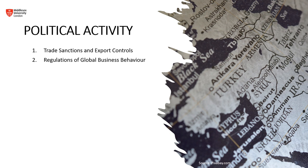We now shift to political activity. The two key topics here are trade sanctions and export controls, and regulations of global business behavior. Trade sanctions are penalties imposed by one country on another, often to discourage the latter from engaging in certain activities that the former finds objectionable. Sanctions can take various forms including tariffs, barriers to trade, import and export quotas, and restrictions on financial transactions. They are used to exert economic pressure on a nation or group to influence political or military actions.